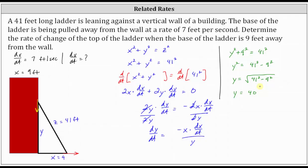And now we can find dy dt. dy dt is equal to negative X, which is negative nine, times dx dt, which is seven, divided by Y, which we now know is 40. Simplifying, we have negative 63 fortieths.